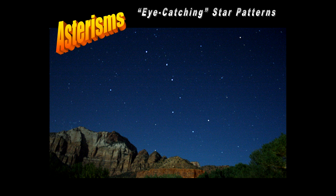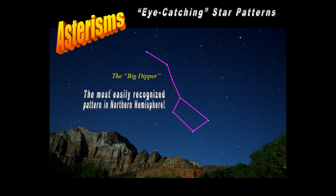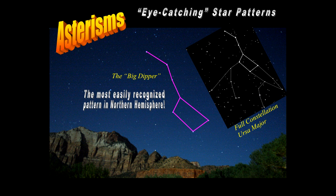So you might notice right on this screen, which is a photograph, the Big Dipper. Once again, the most easily recognized pattern in the northern hemisphere. And that is part of the full constellation known as Ursa Major, the Great Bear.